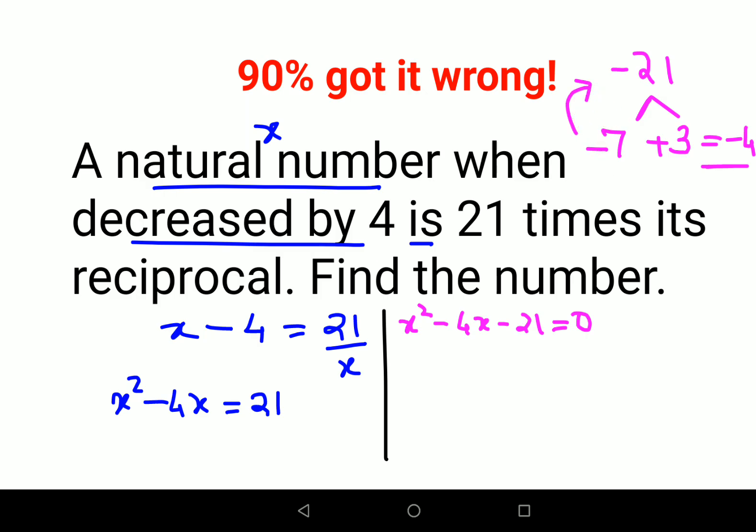Here what we will get is x squared minus 7x plus 3x minus 21 equals 0. Taking x common, I'm left with x minus 7, plus 3 common, so I'm left with again x minus 7.